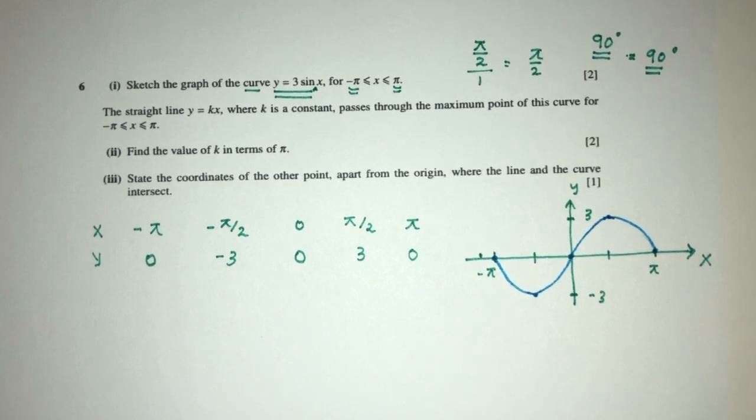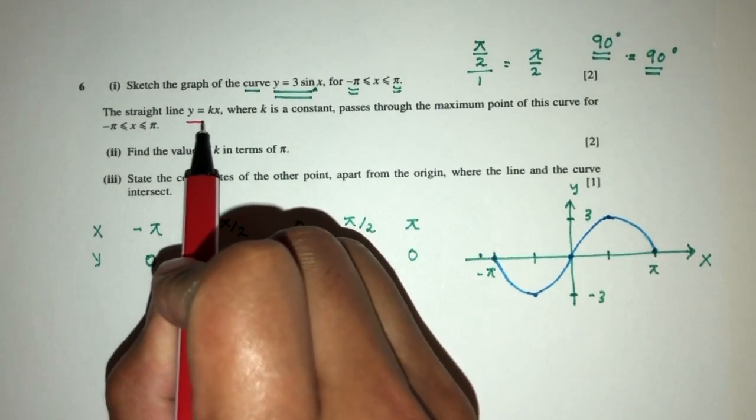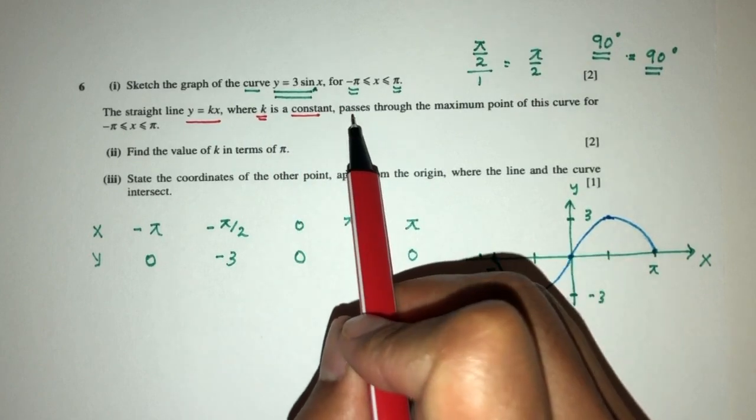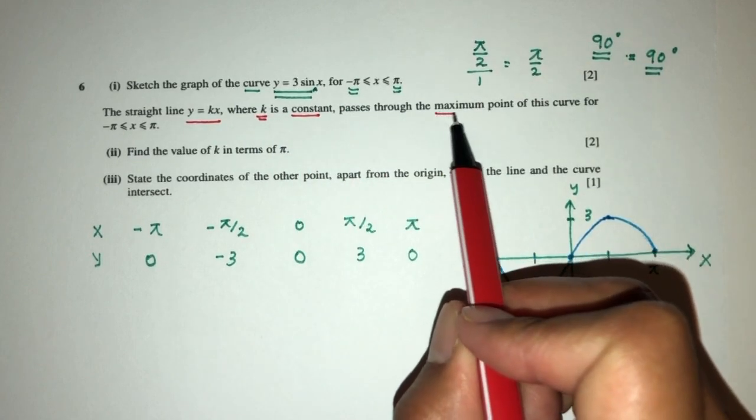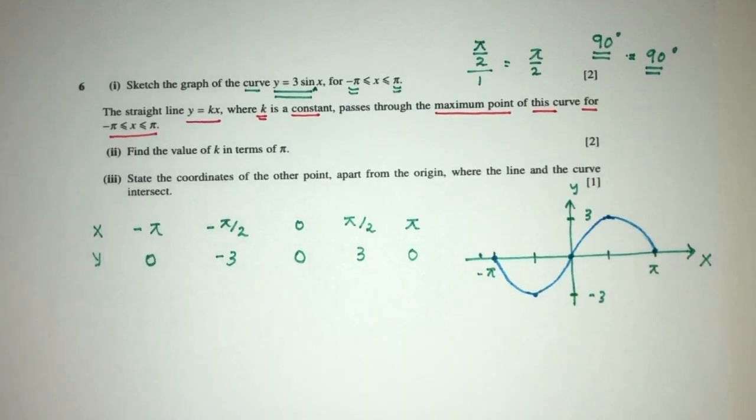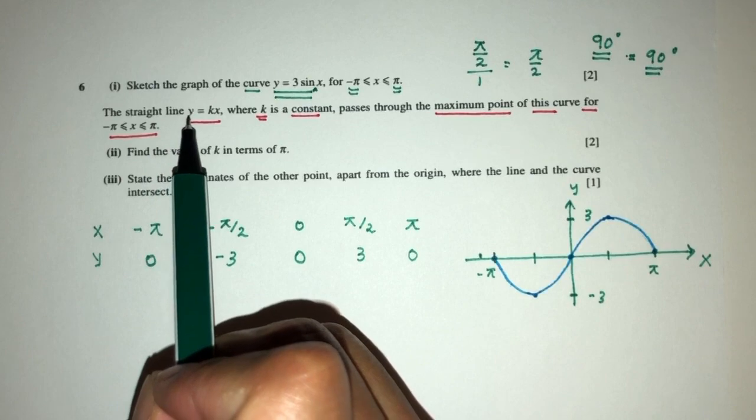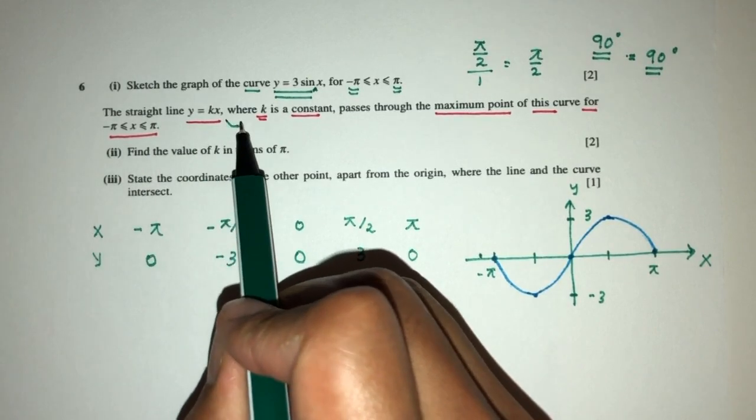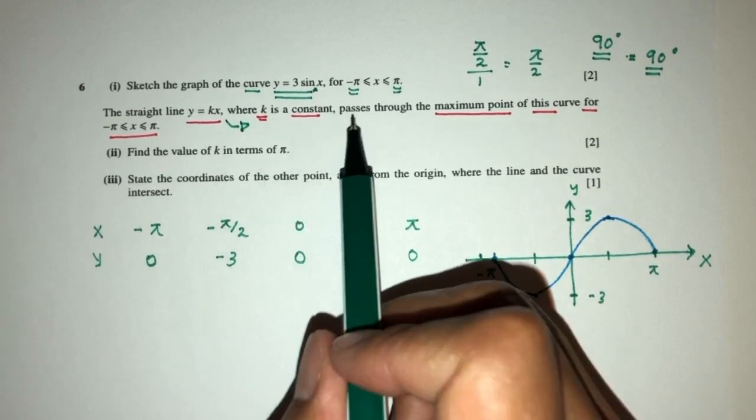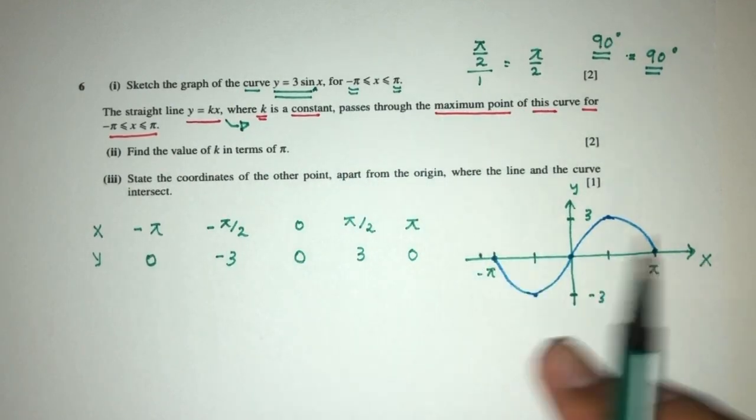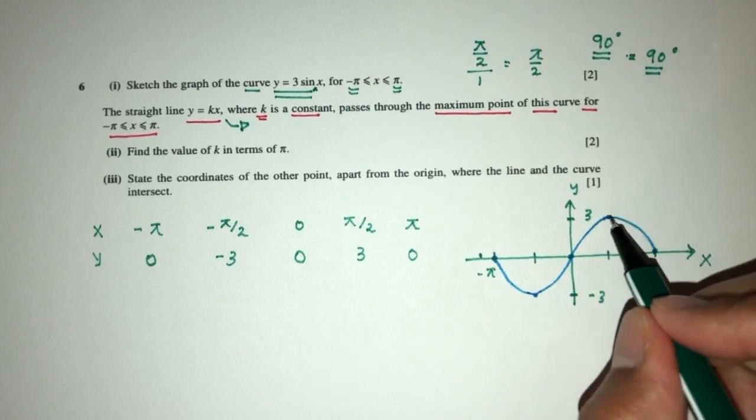Now for part 2, the straight line y equal to kx, where k is a constant, passes through the maximum point of this curve. So let's think. We have a straight line y equal to kx. Great. This is a straight line. Now it passes through the maximum point for the curve. So observe, where is the maximum point?